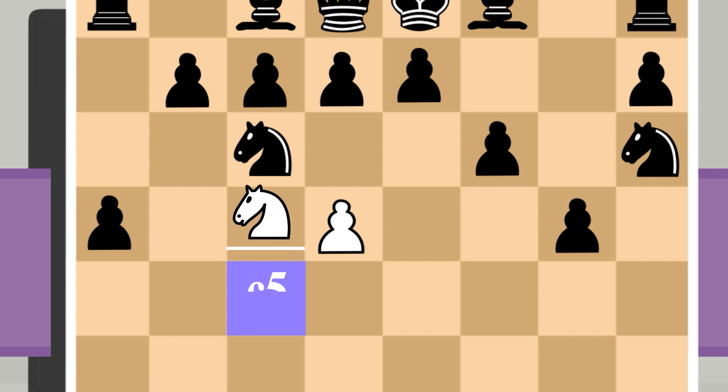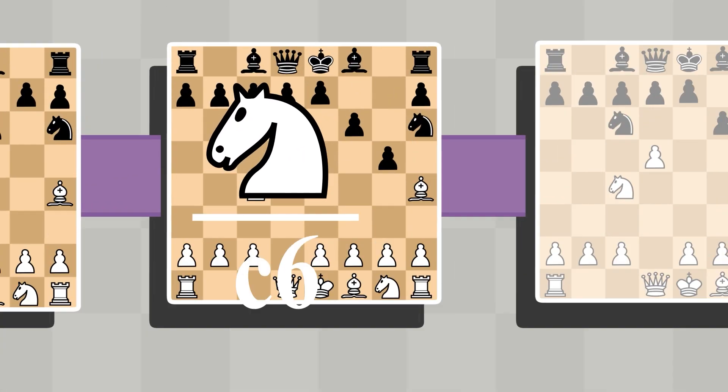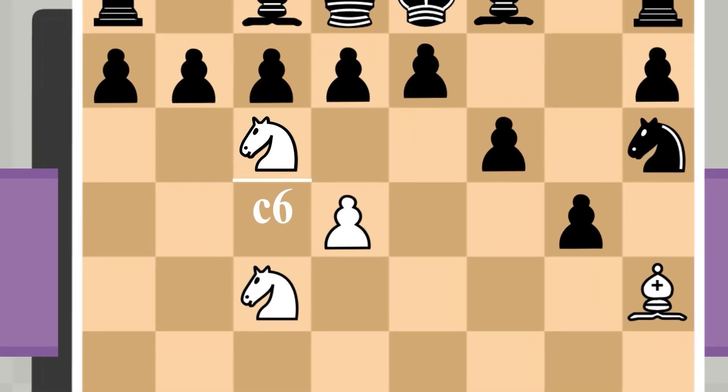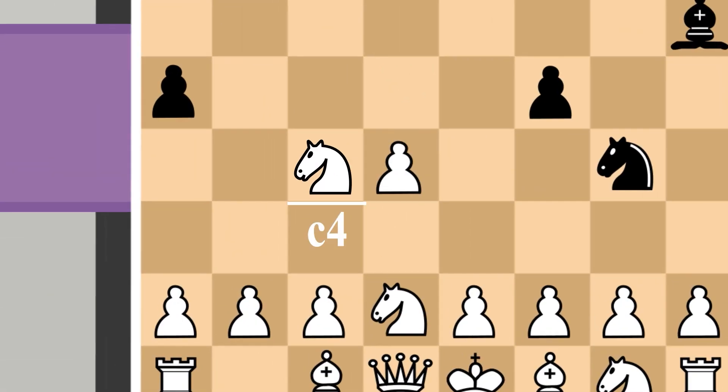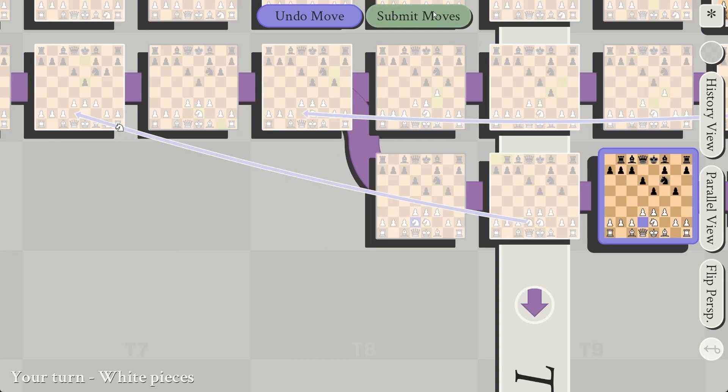If I moved it twice in Y and once in time, it would end up at C6, but one turn to the left of its original board. And if I move it twice in time and once in multiverse, it would end up at C4, same position, but on a completely different board.